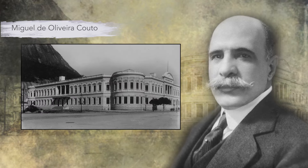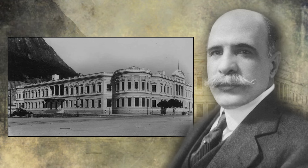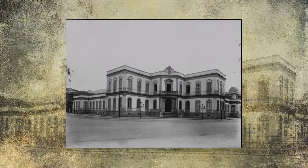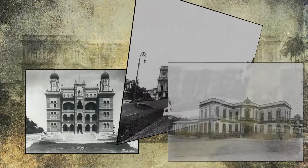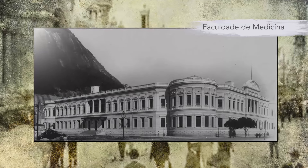Uma das grandes figuras do mundo intelectual da época era o médico Miguel Couto, professor da Faculdade de Medicina do Rio de Janeiro e presidente da Academia Nacional de Medicina. Ele teve presença importante nos congressos organizados durante a exposição. Várias instituições científicas de destaque — a Faculdade de Medicina, a Academia Nacional de Medicina, o Instituto Oswaldo Cruz e o Museu Nacional — participaram da exposição organizando eventos científicos ou cedendo seus espaços para a realização de congressos.